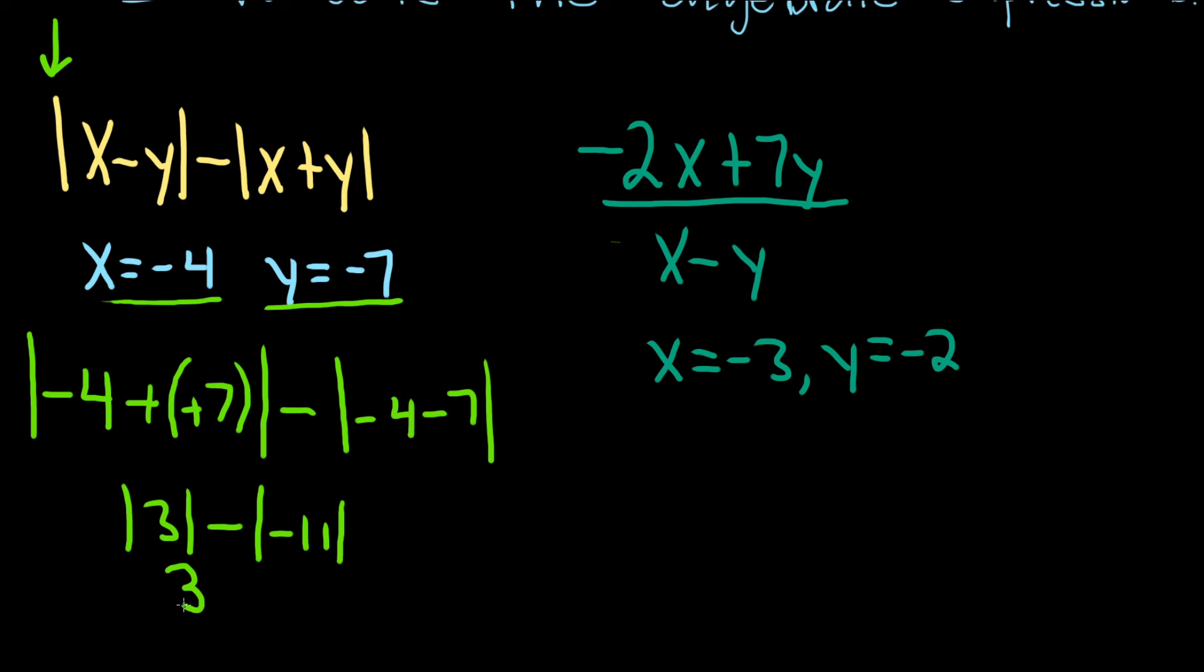So this is actually just 3 minus 11, right? Because this piece here turns into positive 11. It's not because there's two negatives, it's because the absolute value of negative 11 is 11. And then 3 minus 11 is negative 8. So we have the answer to our first problem.